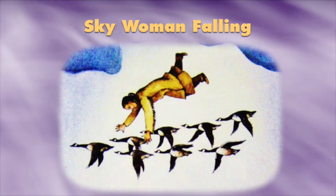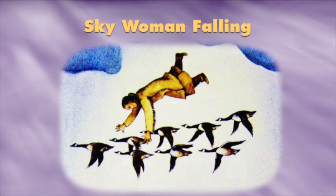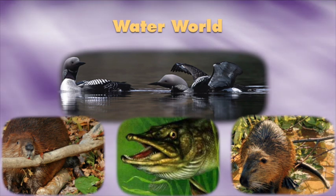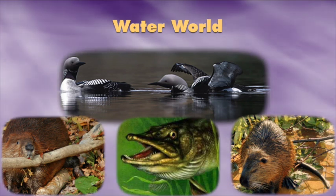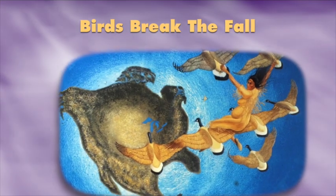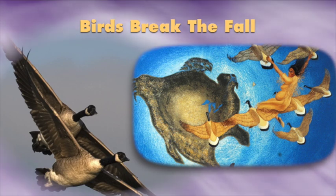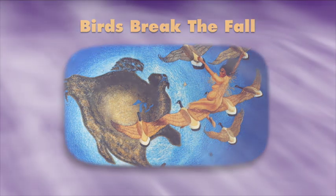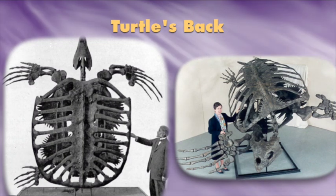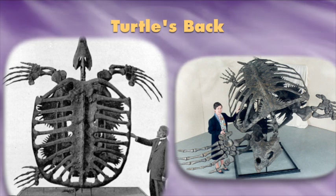So the Sky Woman fell — it must have been quite a journey, falling into this dark world, like a shaft of light coming down. There were water animals down there: birds, turtles, fish, other animals that lived in the water. They looked up and saw this woman coming. They held a council together and asked, what are we going to do about this creature falling from the sky? They decided to send their big birds — the Canadian geese — up to break her fall. They put their wings together, caught her, and slowly brought her down to the back of a turtle. In prehistoric times there were huge turtles large enough to carry someone on their back.